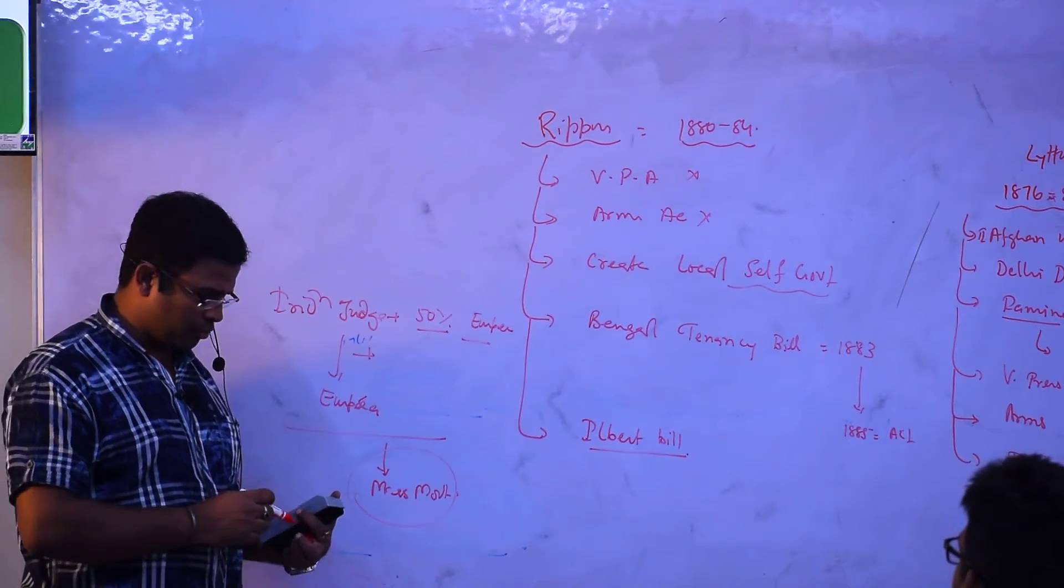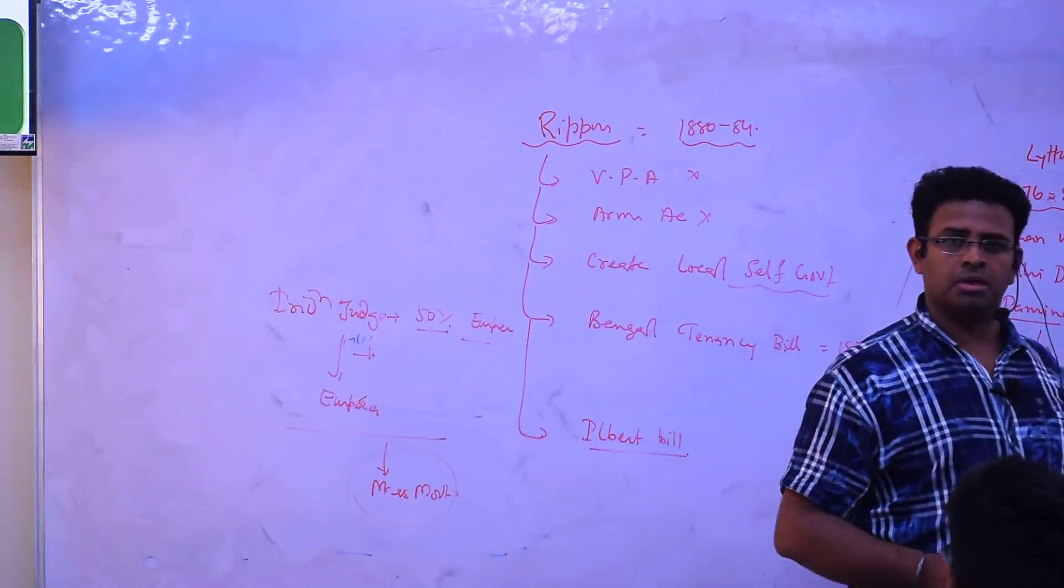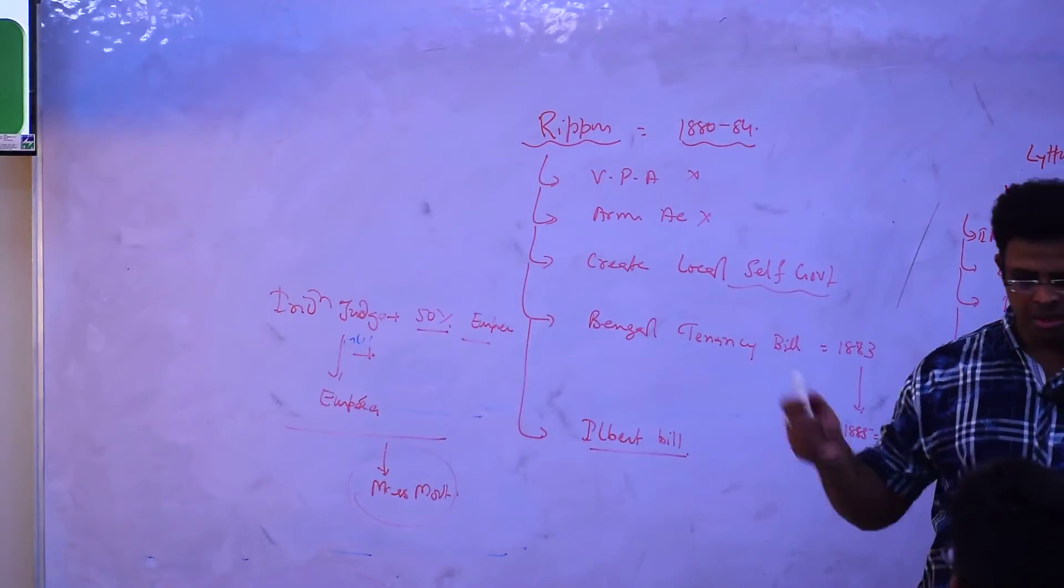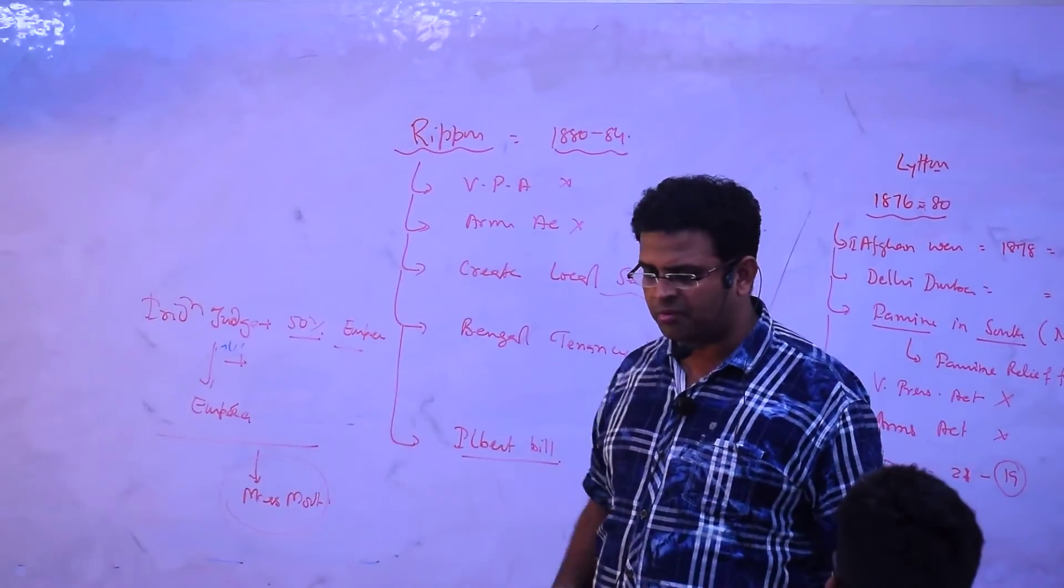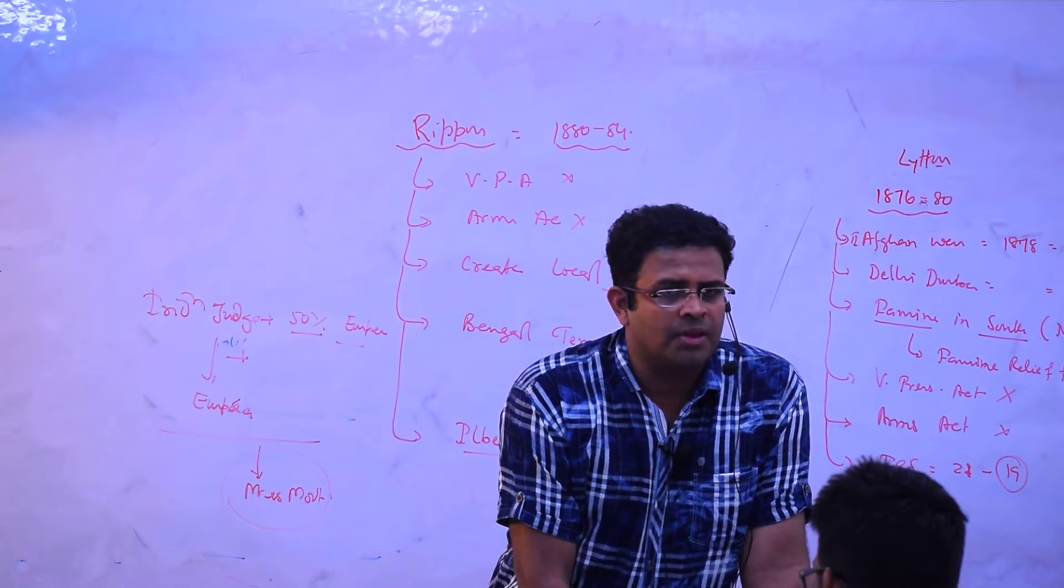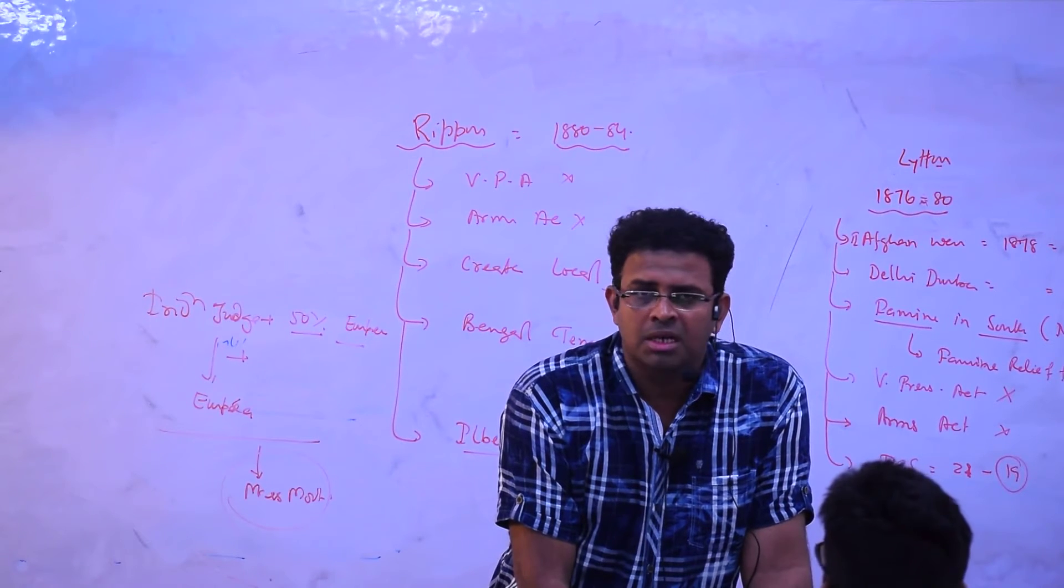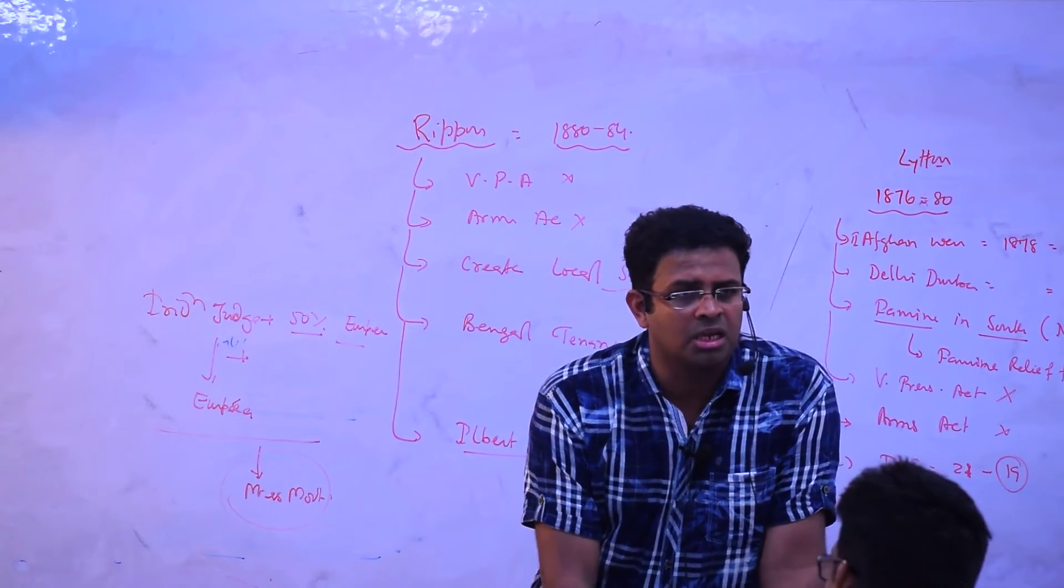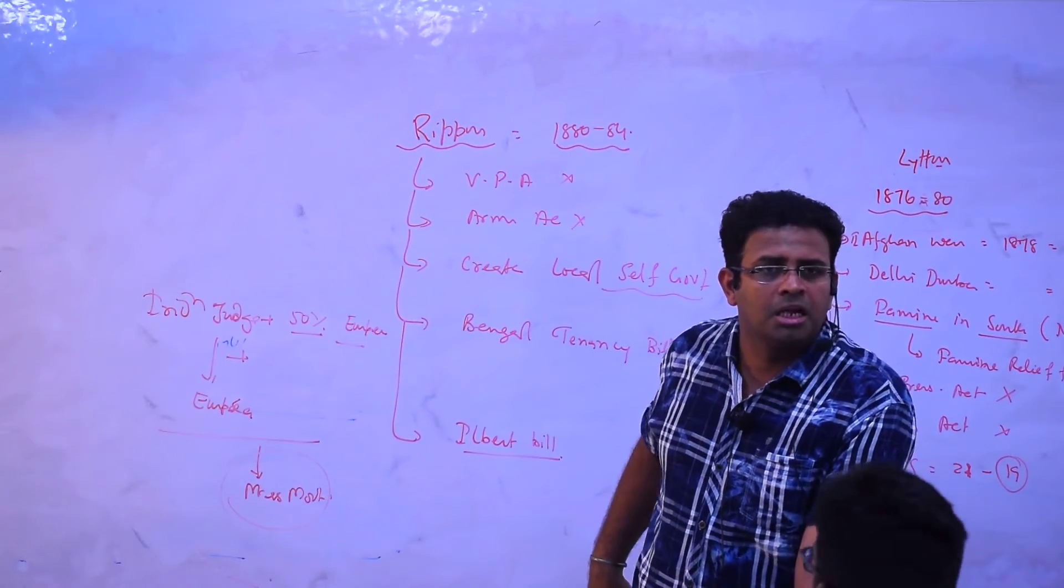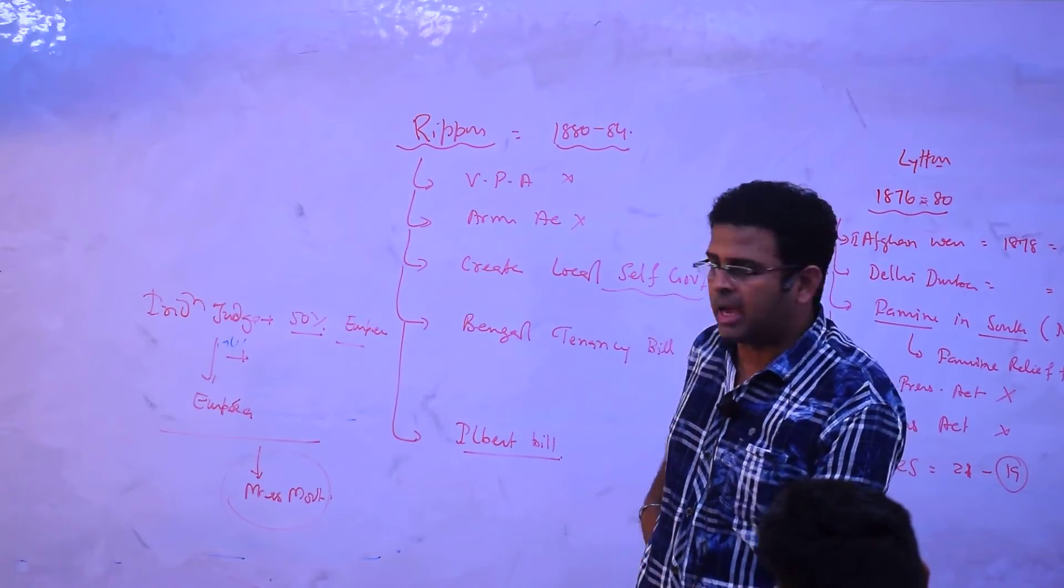Mass movement which is national movement. Mr. Ripon, what Mr. Ripon has done? He has removed, he did several reforms. And in this one Vernacular Press Act, Arms Act, and then self-local government he has done, several things for the farmers. And then farmers ke liye unhone kya kiya tha? Bengal Tenancy Bill joki baad mein 1885 tak ke liye Bengal Tenancy Act.